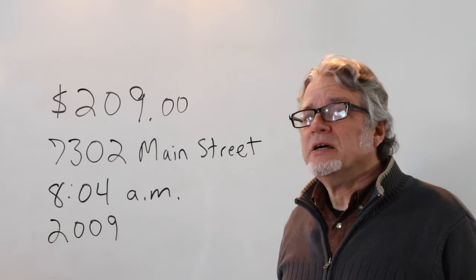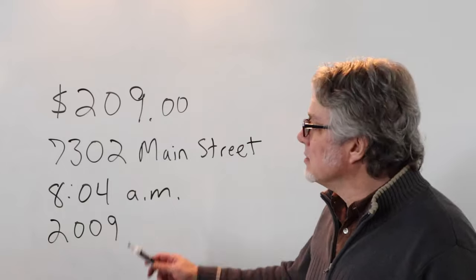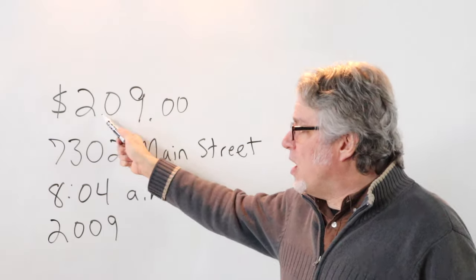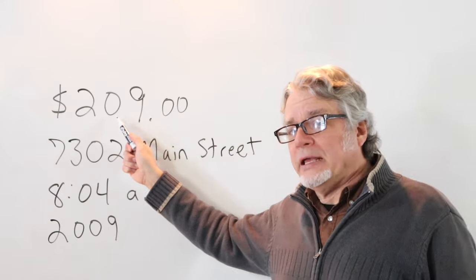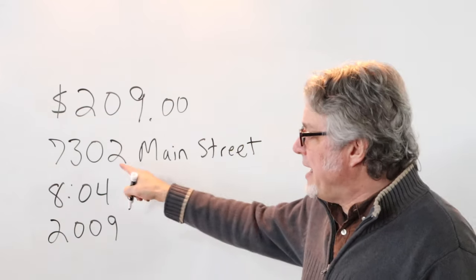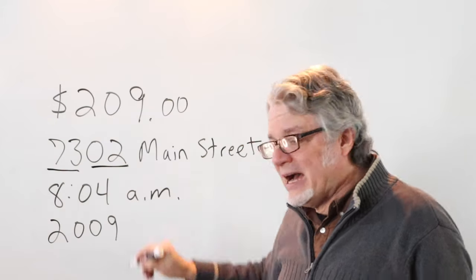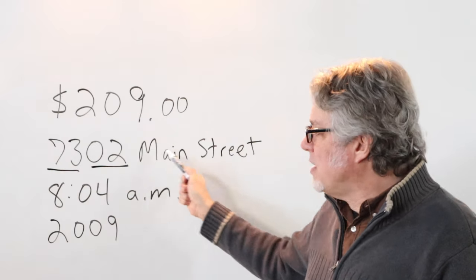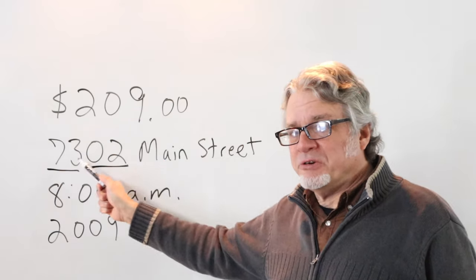When reading numbers, oh is often used instead of zero. In this example, the cost of something is two hundred nine dollars, or you would say two oh nine. Or with this address, remember that addresses are read two numbers at a time. So this is seventy-three oh two Main Street, not seven thousand three hundred two.